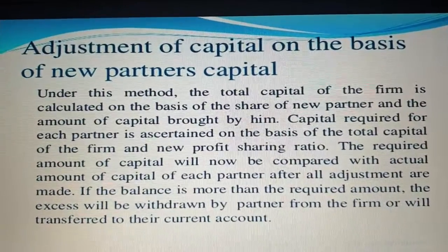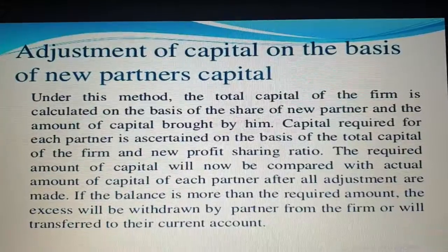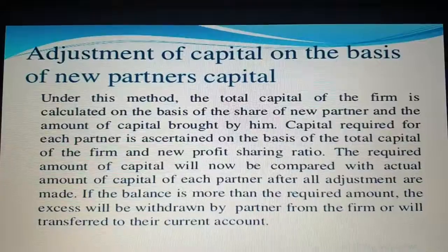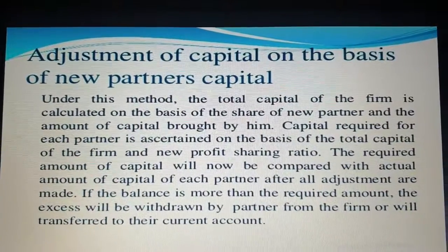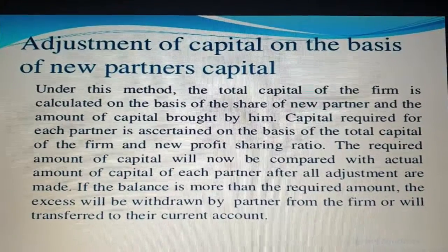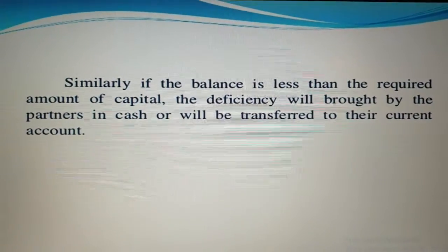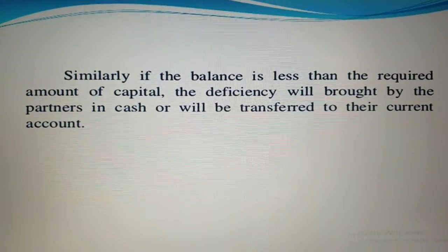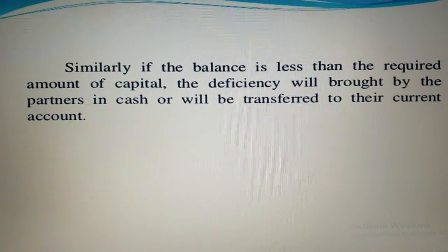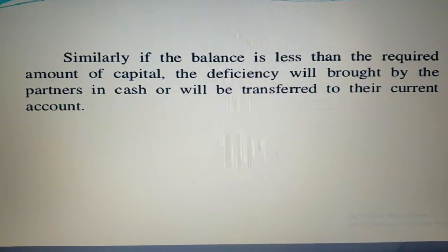If the balance is more than the required amount, the excess will be withdrawn by the partner from the firm and transferred to their current account. If there is an excess or deficit amount, both will be adjusted through the current account or cash, as given in the question. Similarly, if the balance is less than the required amount of capital, the deficiency is brought in by the partner in cash and transferred to their current account. This is how to make the capital adjustment on the basis of new partner's capital.